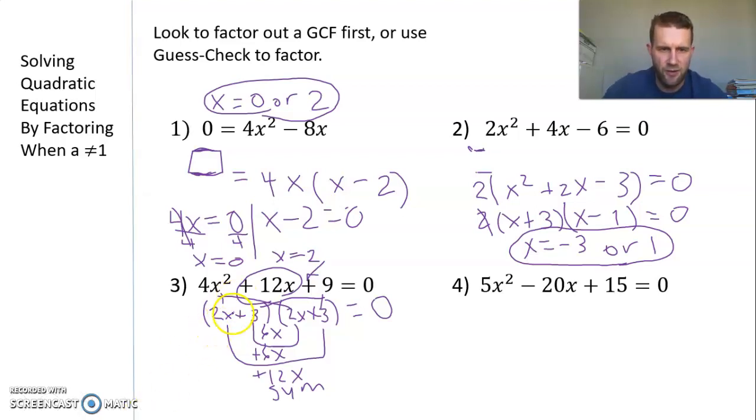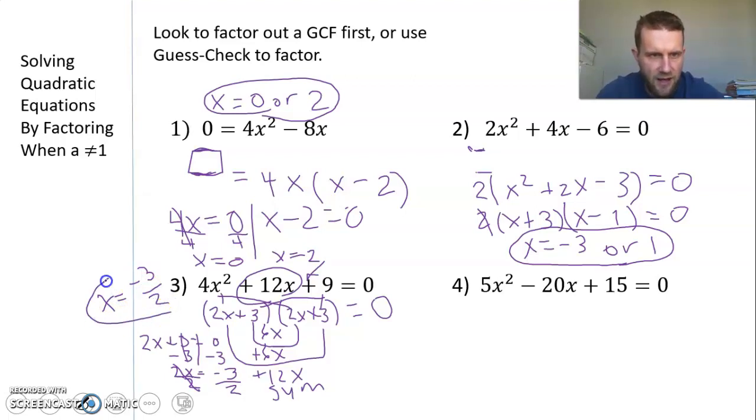If you notice, the factors are identical—both 2x + 3. So I only have to solve one of them. If 2x + 3 = 0, I subtract 3 from each side to get 2x = -3, then divide both sides by 2 to get x = -3/2 or -1.5. It's only one answer because on the graph, only the vertex is touching the x-axis. Because these answers are repeated, if you imagine a U shape, the vertex is right on the x-axis, only touching once at -1.5.